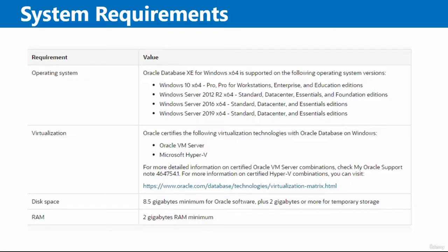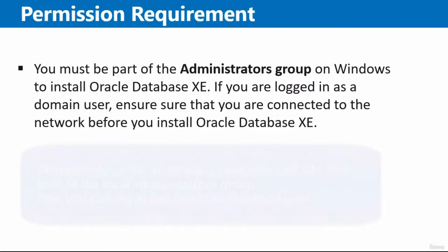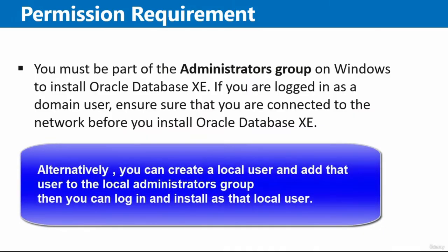You can also use virtualization. Oracle certifies Oracle VM Server and Microsoft Hyper-V. For disk space, you need a minimum of 8.5 gigabytes for Oracle software plus 2 gigabytes or more for temporary storage. For RAM, you need at least 2 gigabytes minimum.